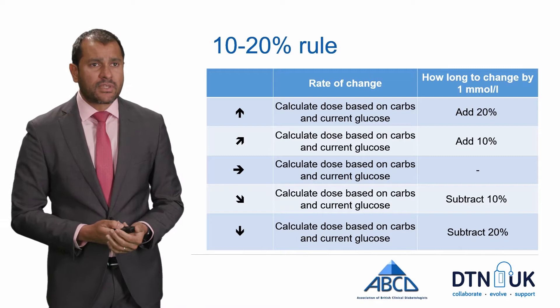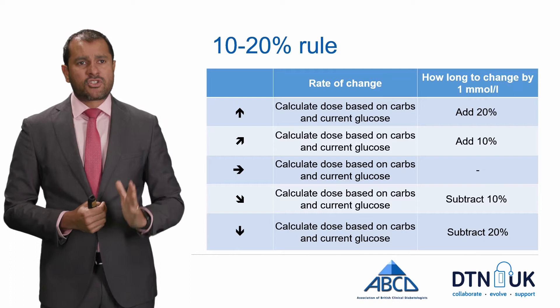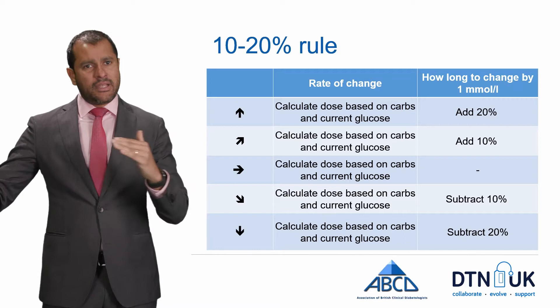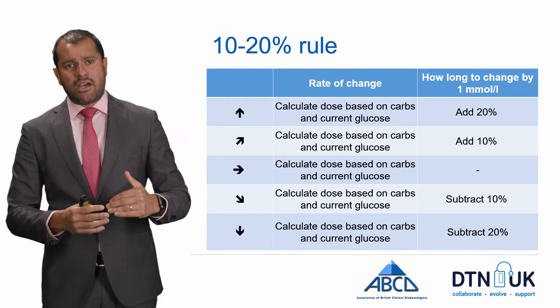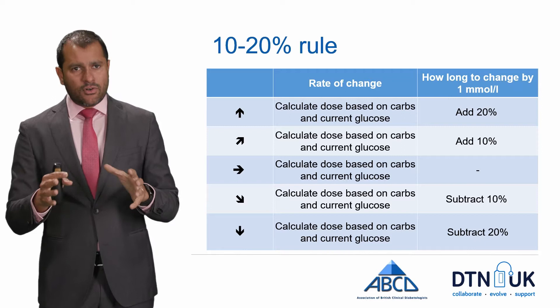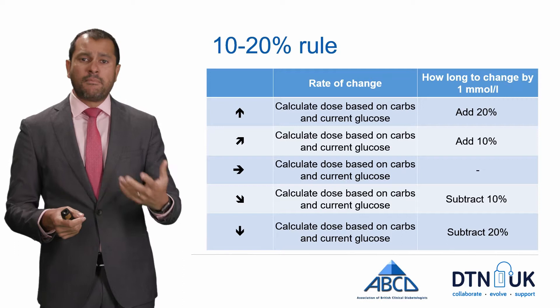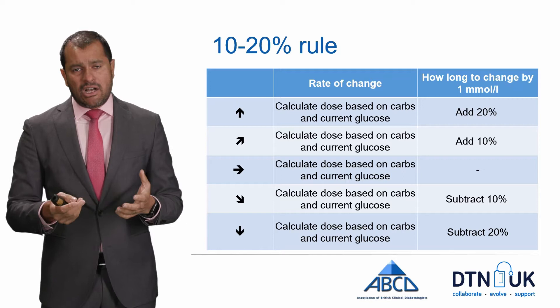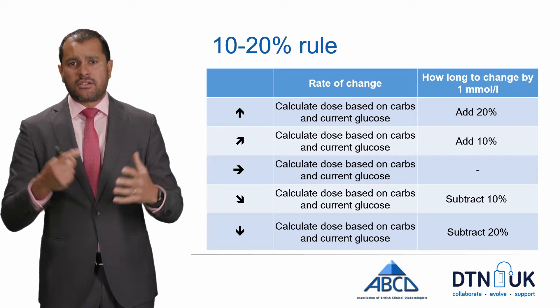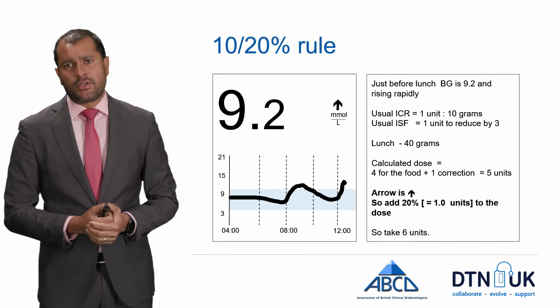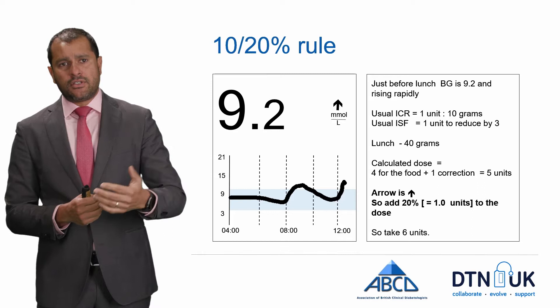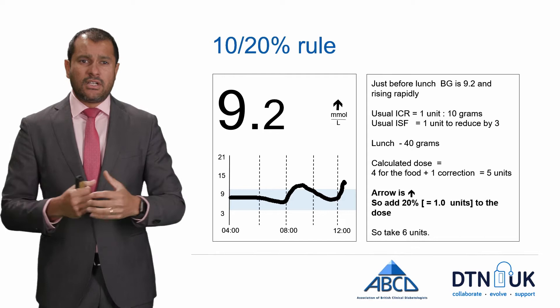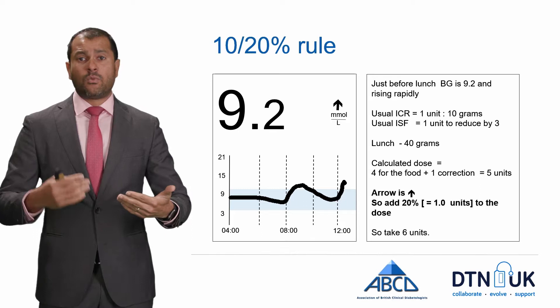The third rule is the 10–20 percent rule: straight up arrow — do your normal calculation and add 20%; oblique up arrow — add 10%; oblique down arrow — subtract 20%; straight down arrow — subtract 20%. These rules were created largely for pump users, so if you're using a pen, round to the nearest half or whole unit. For the same example (blood glucose 9.2, straight up, 40 grams of carb): calculated dose is 5 units; add 20% (1 unit) = 6 units total.